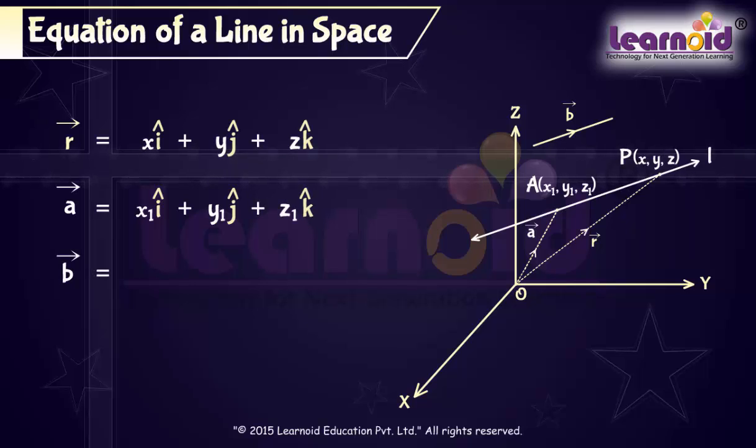Vector B is equal to ai plus bj plus ck. Substituting values of R and A in vector equation of line R equals A plus lambda B.